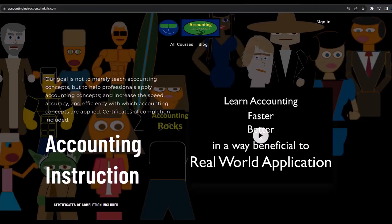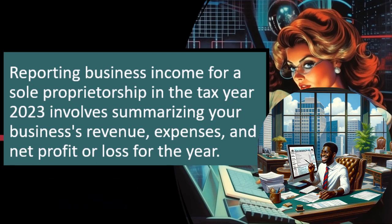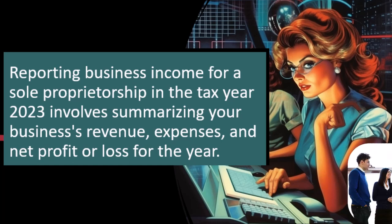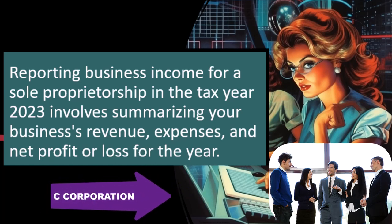If you'd like a commercial-free experience, consider subscribing to our website at accountinginstruction.com or accountinginstruction.thinkific.com. Lower income returns are usually easier, although they can be quite complex these days with things like the earned income credit. Are you focused on business returns or not? Business returns could include a sole proprietor, but also a partnership as a flow-through entity, an S corporation as a flow-through entity, or an LLC flow-through entity, or a C corporation which is a separate legal entity taxed at the corporate level.